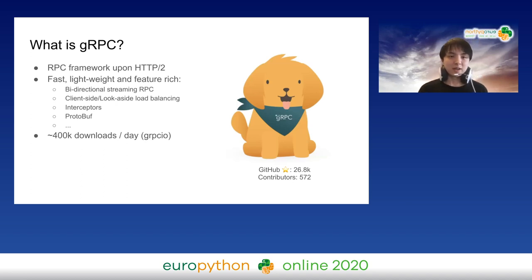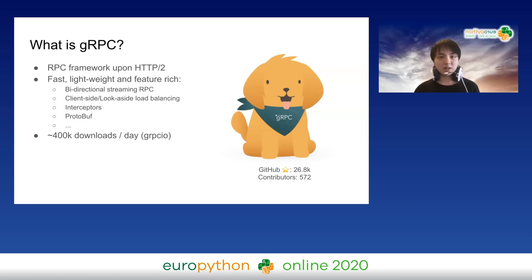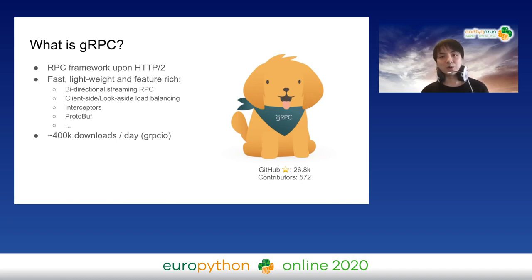So what is gRPC? As the name suggests, gRPC is an RPC framework built upon HTTP/2 as its transport protocol. It's meant to be fast and lightweight and is designed for distributed systems. It carries some highlight features — for example, streaming RPC, various load balancing policies, and interceptors so you can inject logic at any stage of an RPC. We also integrate well with Protobuf, so it enforces your API contract. Currently we're getting around 400,000 downloads per day. And on the right side is our cute new logo — her name is golden retriever pancake, and she's cute. So there's another reason for you to try out gRPC today.